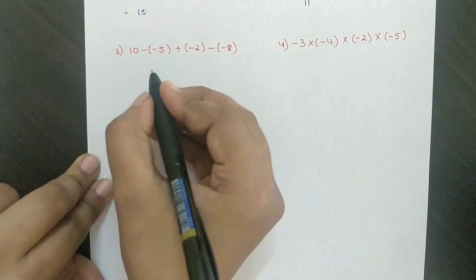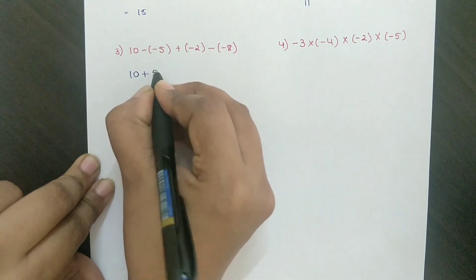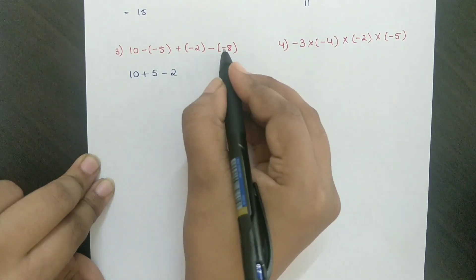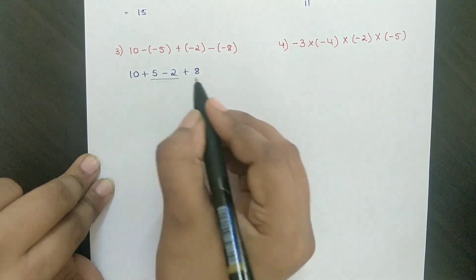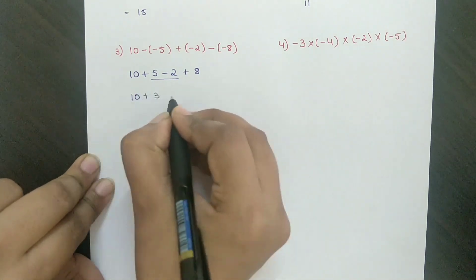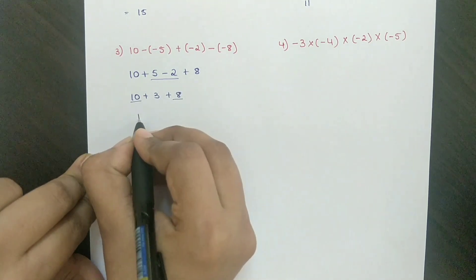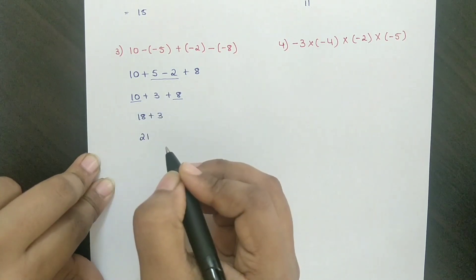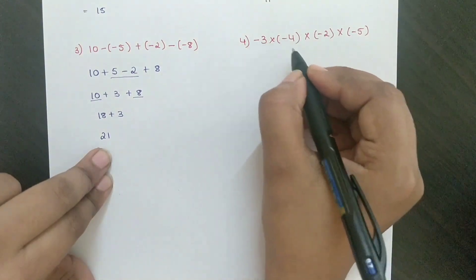Third problem: 10 minus of minus plus 5, plus into minus minus 2, minus into minus plus 8. If you see this, 5 minus 2 equals 3, then 10 plus 3 plus 8. 18 plus 3 equals 21. Minus into minus plus: 4 times 3 is 12.